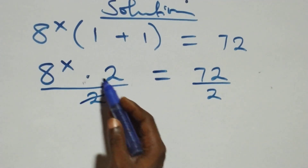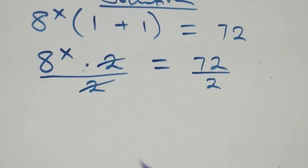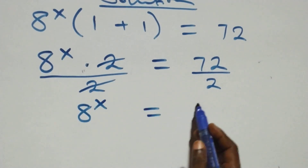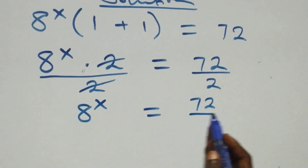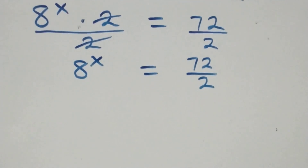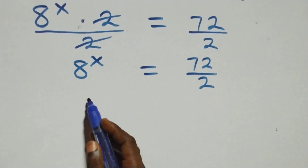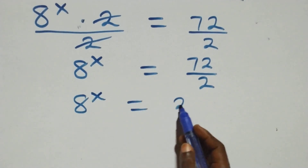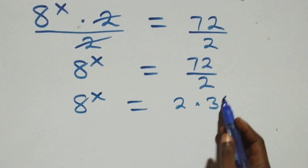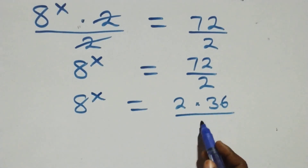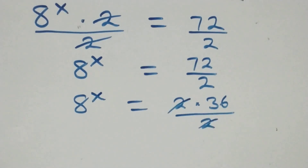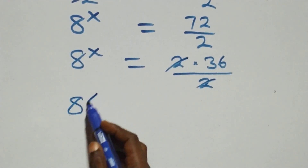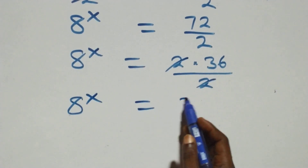Dividing both sides by two, the two cancels and we have 8 raised to power x equals 72 over two. We can also write this as 8 raised to power x equals 2 times 36, then over two — the twos cancel each other — so 8 raised to power x equals 36.